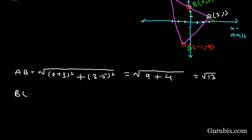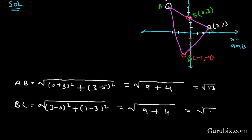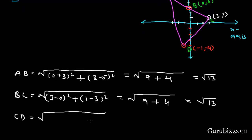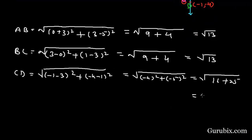Now we shall find BC using the distance formula. For CD: CD = √(((-1) - 3)² + ((-4) - 1)²) = √((-4)² + (-5)²) = √(16 + 25) = √41.